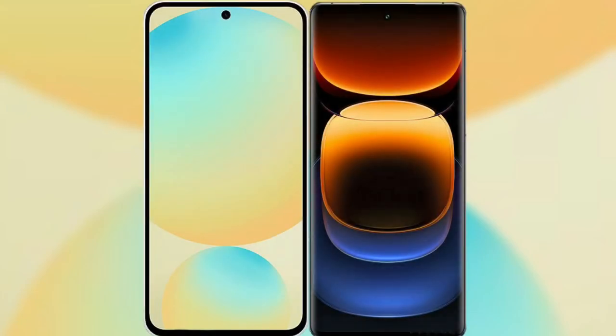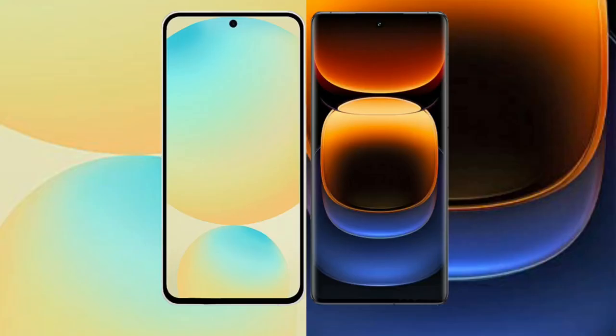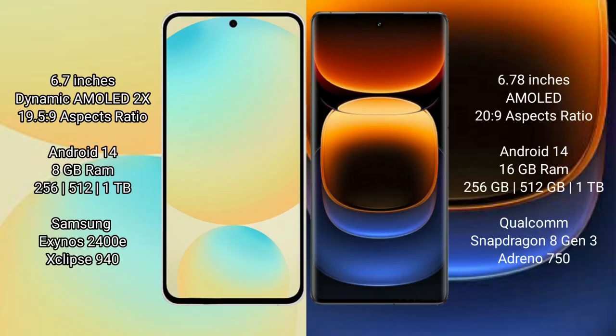I will compare the new Samsung Galaxy S24 FE with the Vivo iQOO 12 Pro. The Samsung Galaxy S24 FE features a 6.7-inch Dynamic AMOLED display, while the Vivo iQOO 12 Pro features a 6.78-inch AMOLED display.